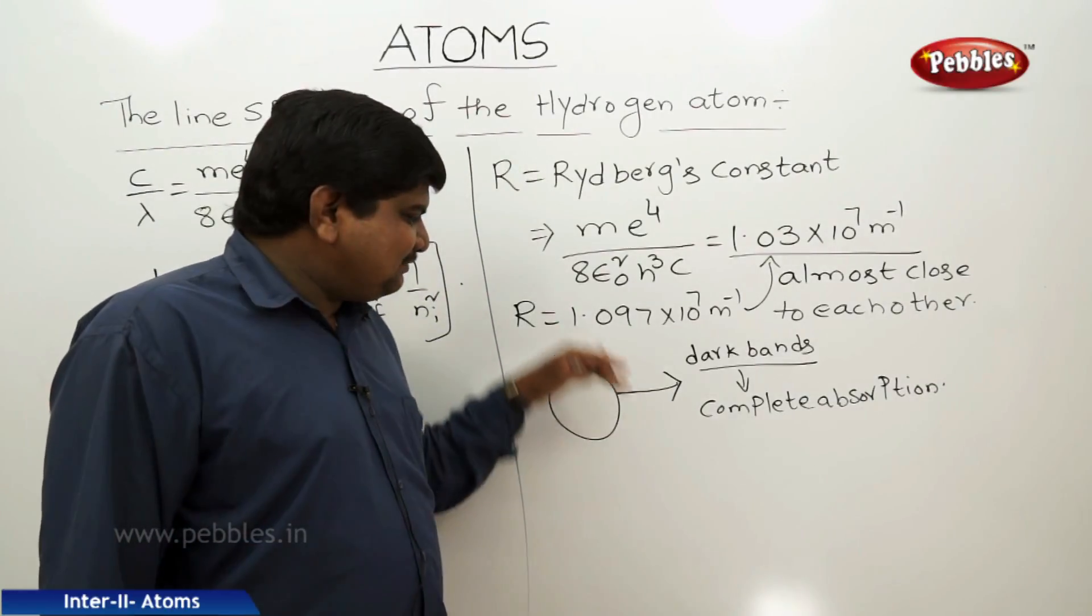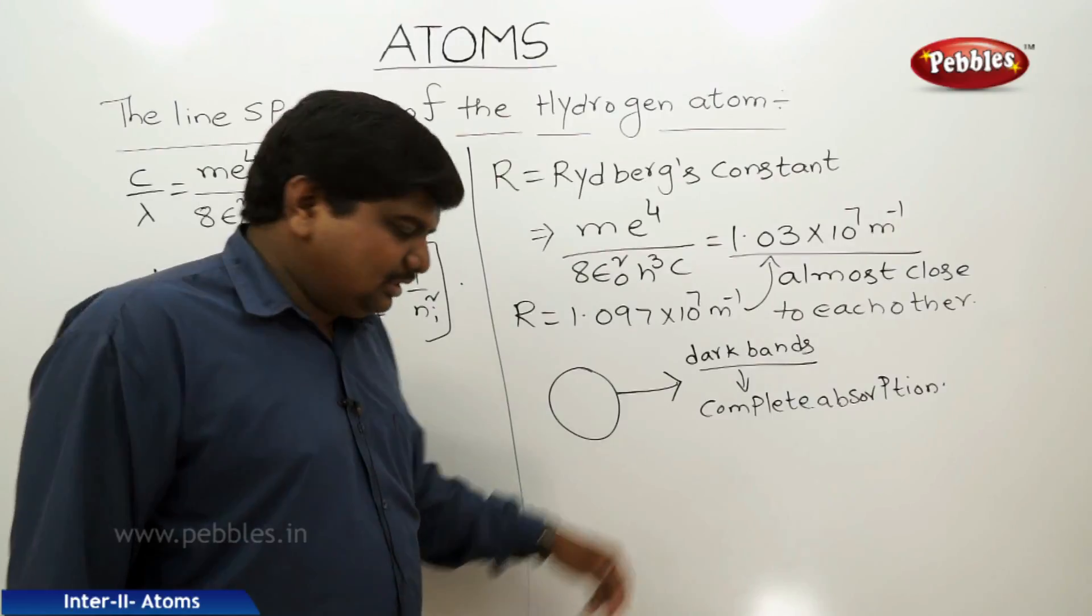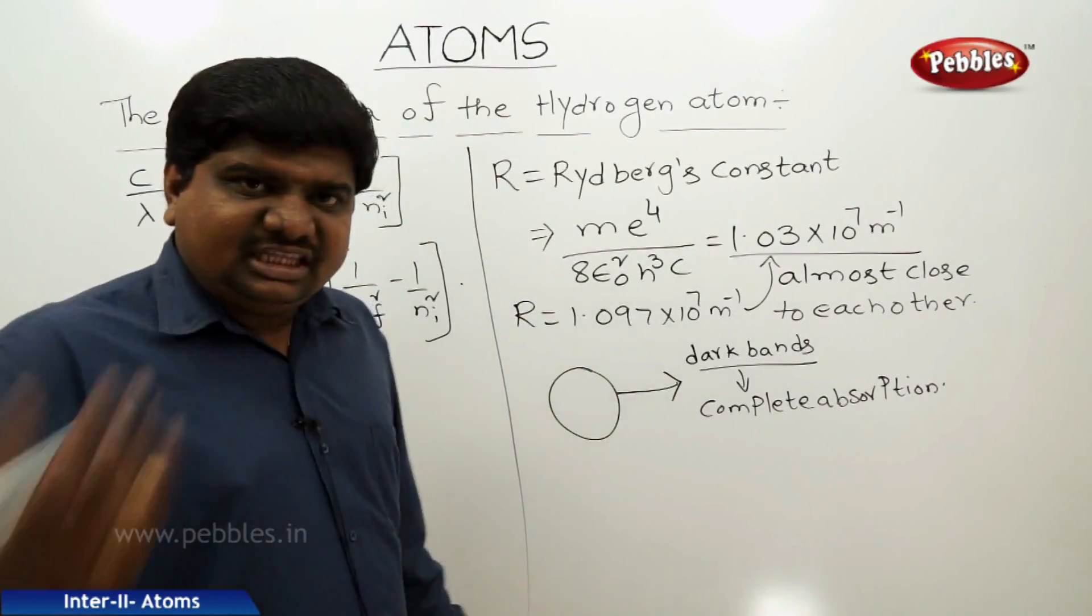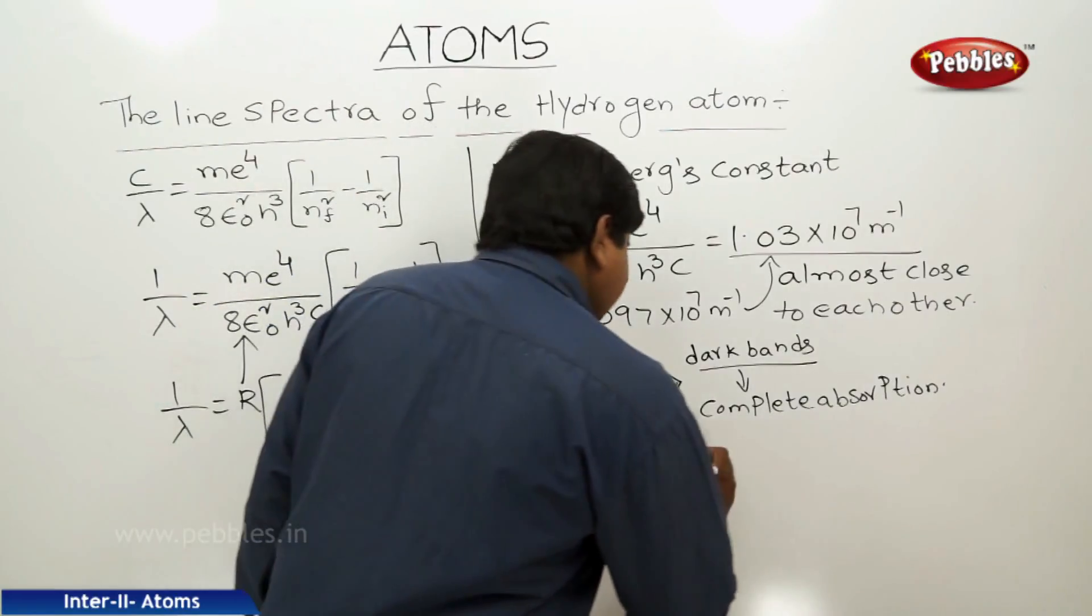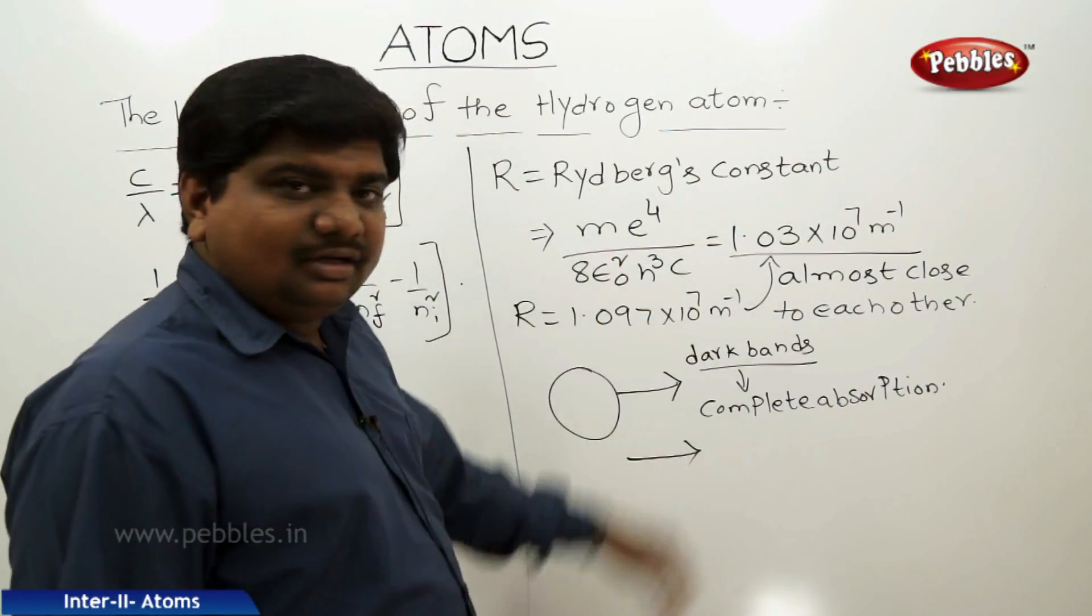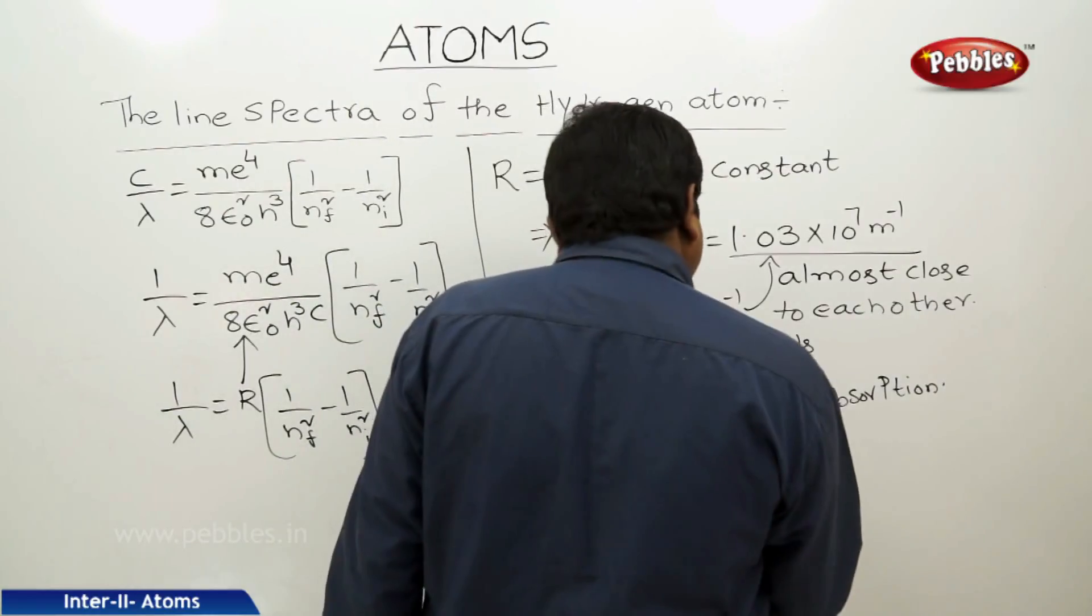Next, if electrons are de-excited from higher energy levels to ground level—E2 to E1, E3 to E1, E4 to E1, or infinite to E1—they release energy. Such multiple transitions arranged in order give a continuous line spectrum.